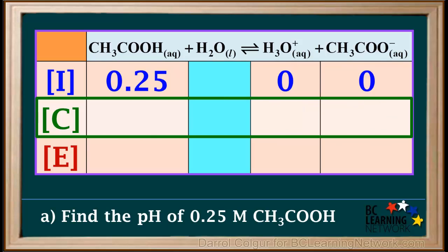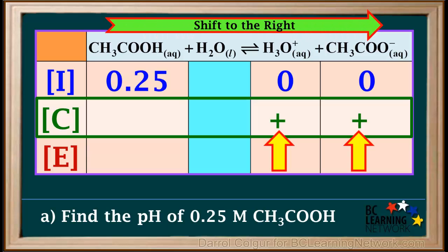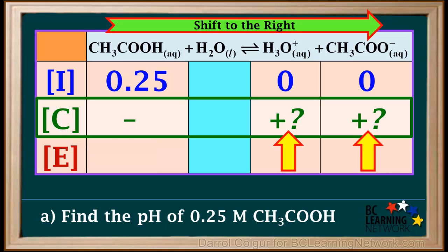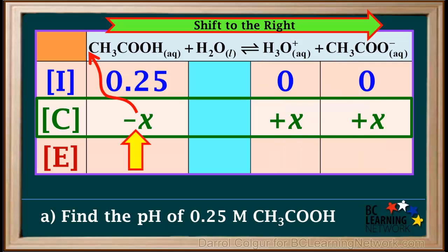No H3O+ or CH3COO− was added, so we consider their concentrations to be zero before ionization. Now we'll look at the changes in concentration as ionization occurs. Because there were no products initially, the equilibrium will shift to the right. As this shift occurs, the concentrations of hydronium and ethanoate ions will both increase, so we write plus signs here. The concentration of CH3COOH will decrease, so we write a minus sign here.